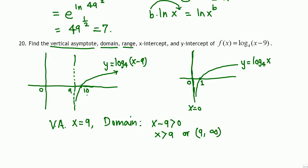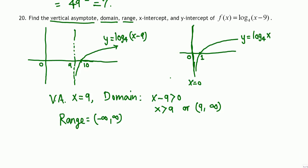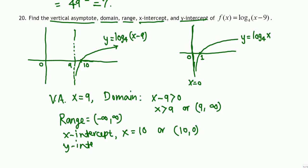The range: the graph goes all the way to negative infinity and slowly increases, so all real numbers are in the range — same as the original log function. The x-intercept is x = 10, or written as the point (10, 0). There is no y-intercept because the graph does not intersect the y-axis.